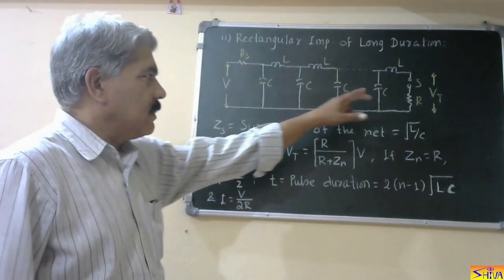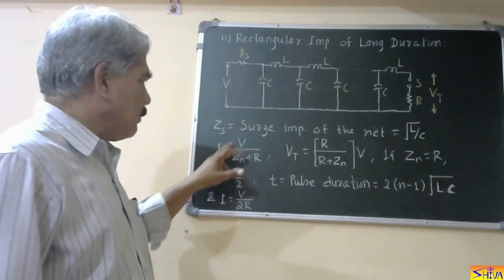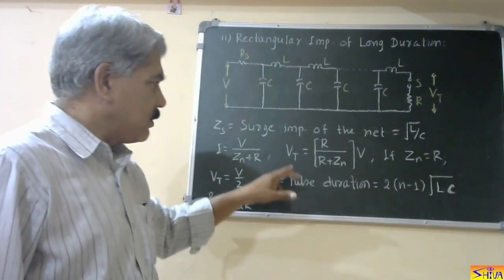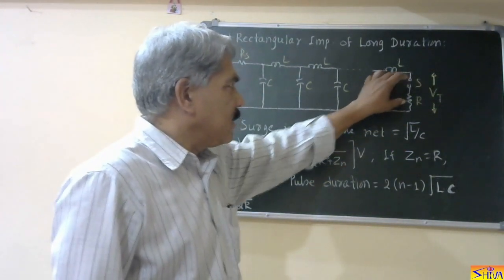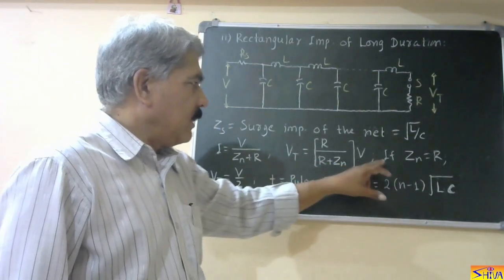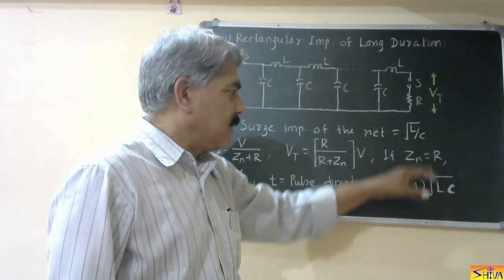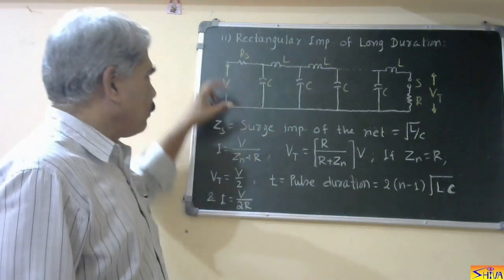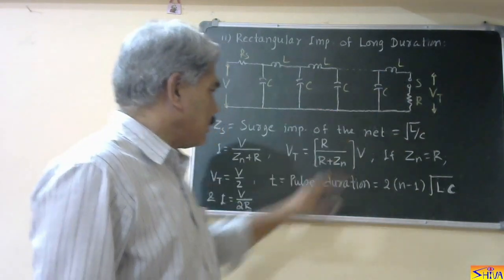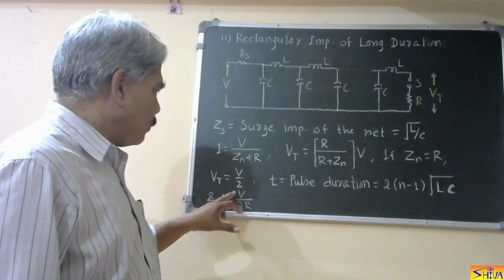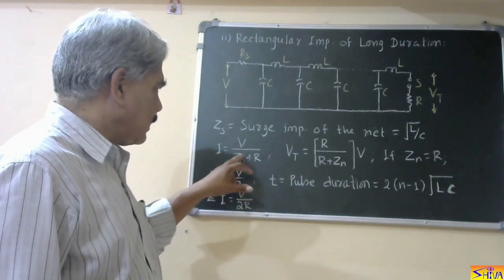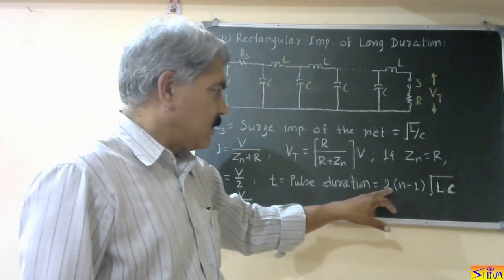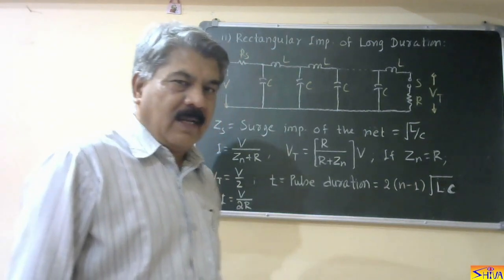When the spark gap is fired, the current is given by I = V / (ZL + R), where ZL is the surge impedance of the network and R is the dynamic resistance of the test object. The voltage appearing across the test object is Vt = R/(R + ZL) × V. If the surge impedance and dynamic resistance are equal, then Vt = V/2. The current I = V/(2R) in that case, and the pulse duration is given by T = (2N − 1)√(LC).